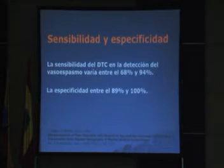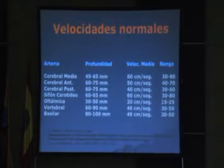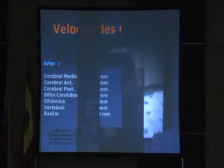La sensibilidad en la detección de vasospasmo es del 68 al 94%, y la especificidad del 89 al 100% por Doppler. Las velocidades normales están entre 20 a 60 centímetros por segundo.